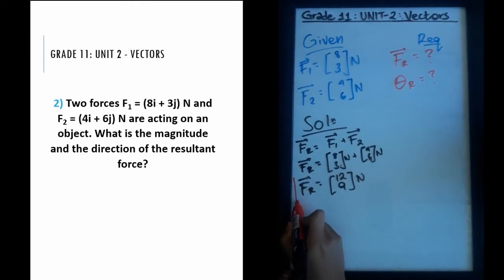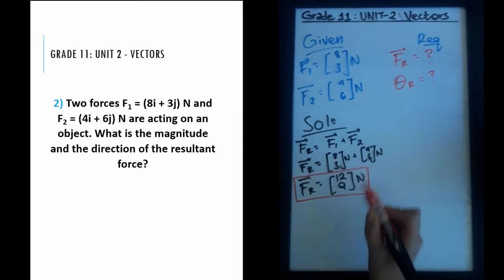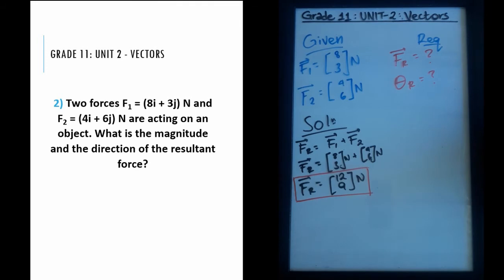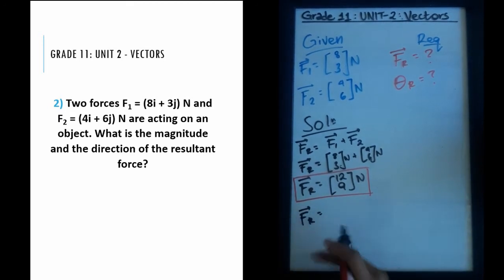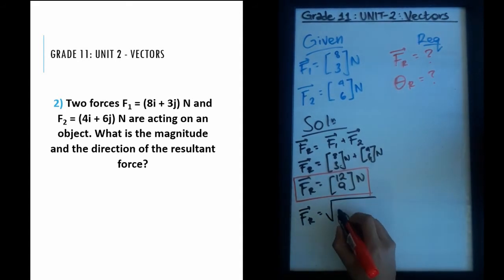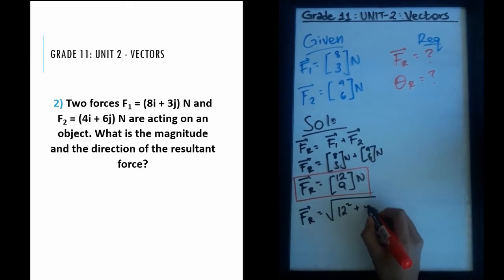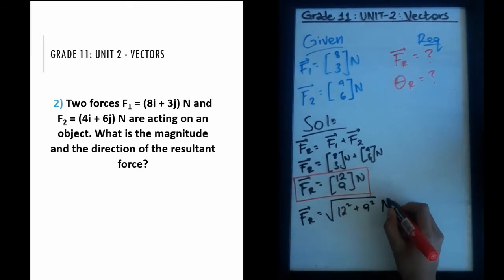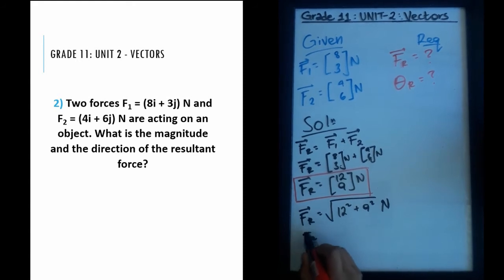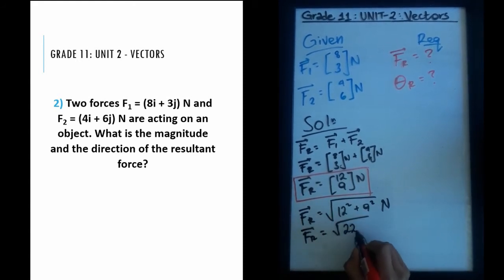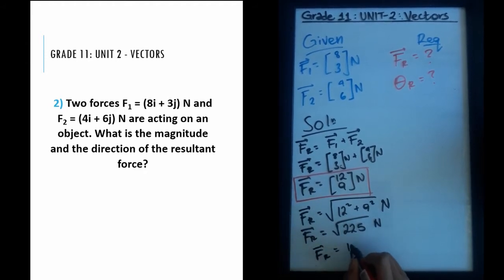The answer (12, 9) is in vector form. To express this as a magnitude, I find the square root of 12 squared plus 9 squared Newtons. That's the square root of 225 Newtons, which gives a value of 15 Newtons. Both forms are correct, but 15 Newtons is the magnitude of the resultant vector.